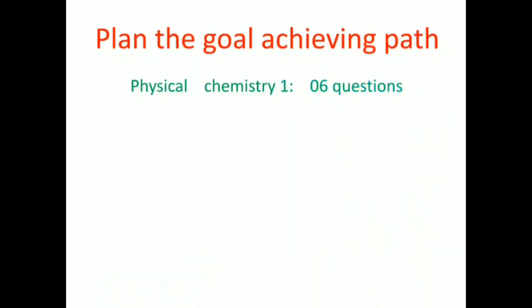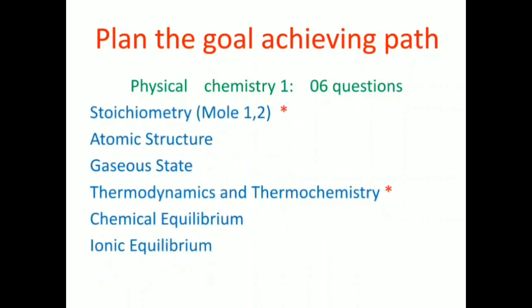Plan the goal-achieving path. For Physical Chemistry 1, we know we're getting six questions. But what are the topics covered in Physical Chemistry 1? These are the topics covered. You can take a screenshot or pause and write these down. You can see a red asterisk on two topics - these are the most important. In Physical Chemistry, a lot of questions come only from these two topics, so note that they are very important.